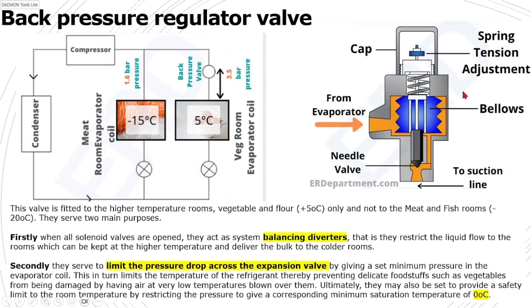This is actually a spring-loaded valve. As shown in the diagram on the right-hand side, it simply holds a pressure. The refrigerant gas coming out of the evaporator cannot easily pass through — it has a barrier. So it holds back some pressure, causing the evaporator pressure to increase. As the evaporator pressure increases, the saturation temperature also increases.